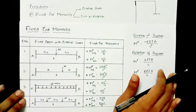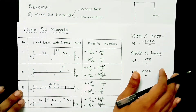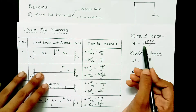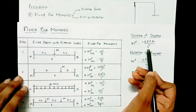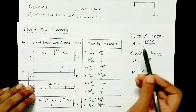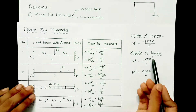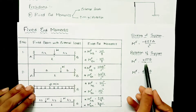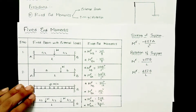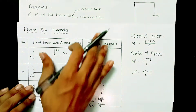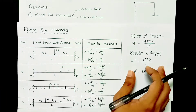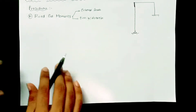If you are not having external loads and instead have sinking or rotation of supports, use the corresponding formulas. For sinking of support, use -6EIδ/L², where δ is the amount of displacement or deflection. For rotation of support, use 4EIθ/L and 2EIθ/L, where θ is the slope at that joint. These complete step one.